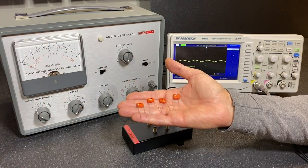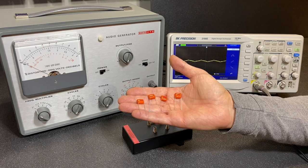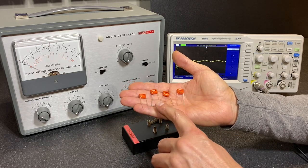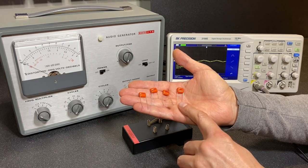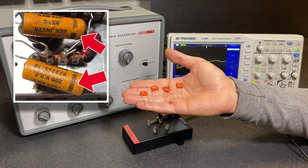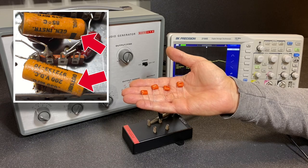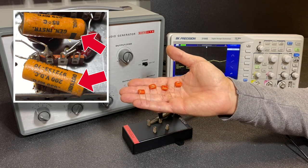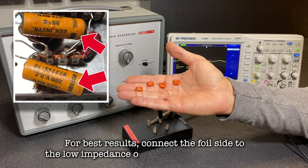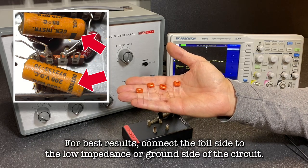These are the capacitors I've selected to replace the old wax paper caps in our recorder. We have two at 0.02 microfarad and two at 0.04 microfarad. Now the wax paper caps in the recorder are marked for the foil side, which indicates the lead that's connected to the outer foil of the capacitor. The outer foil provides shielding for the capacitor, which can help minimize noise.